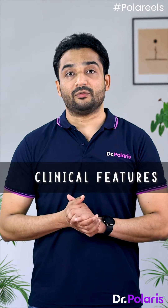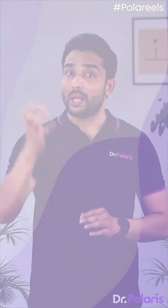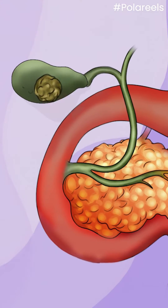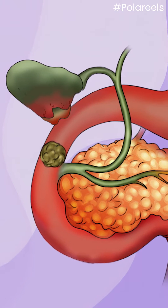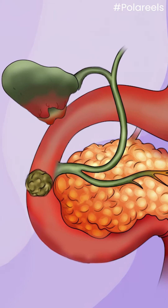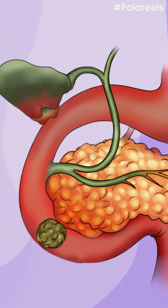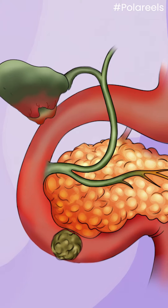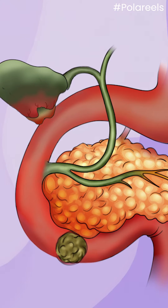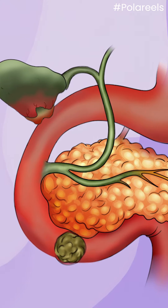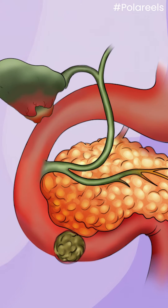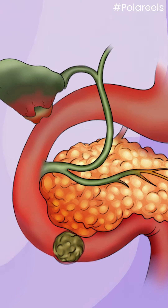Clinical features. Once the stone enters the duodenum, it travels down the small intestine and gets impacted 30 to 60 centimeters proximal to the ileocecal junction, resulting in intestinal obstruction.